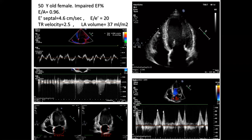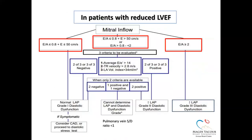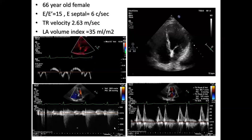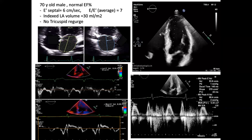If only two variables are available: two positive → elevated LV pressure; two negative → impaired relaxation. Sometimes we need to add pulmonary venous Doppler to aid diagnosis in the intermediate area of the flowchart. If pulmonary vein S/D ratio is less than 1, it will help confirm the diagnosis.